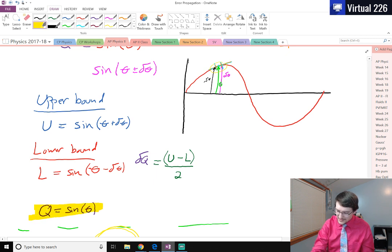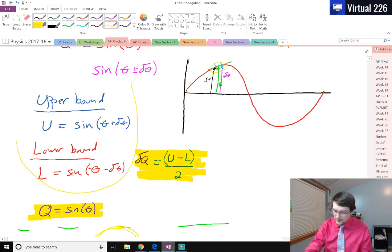So that's how we have our q. It's just the function, whatever it is. In our case, we looked at sine of the value. Del q is this upper minus lower over two where we get the upper minus lower by just pushing the function forward a bit and pulling it back a bit.